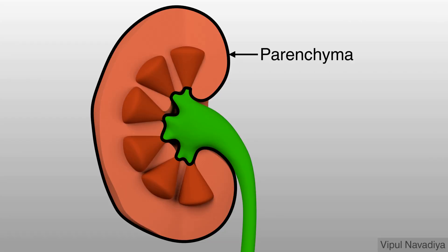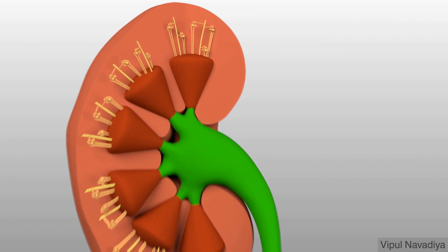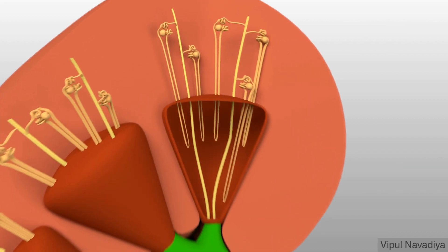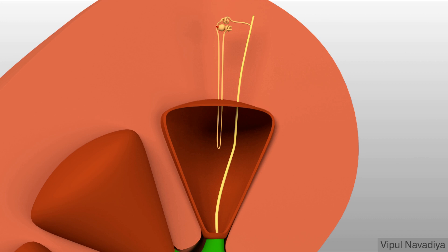You already know that this is renal parenchyma, the main functional area of kidney. Now let me show you some nephrons here. They are the functional units of the kidney. Each kidney has about one million nephrons. They are organized like this. Now let's focus on its structure. It is made up of two components.